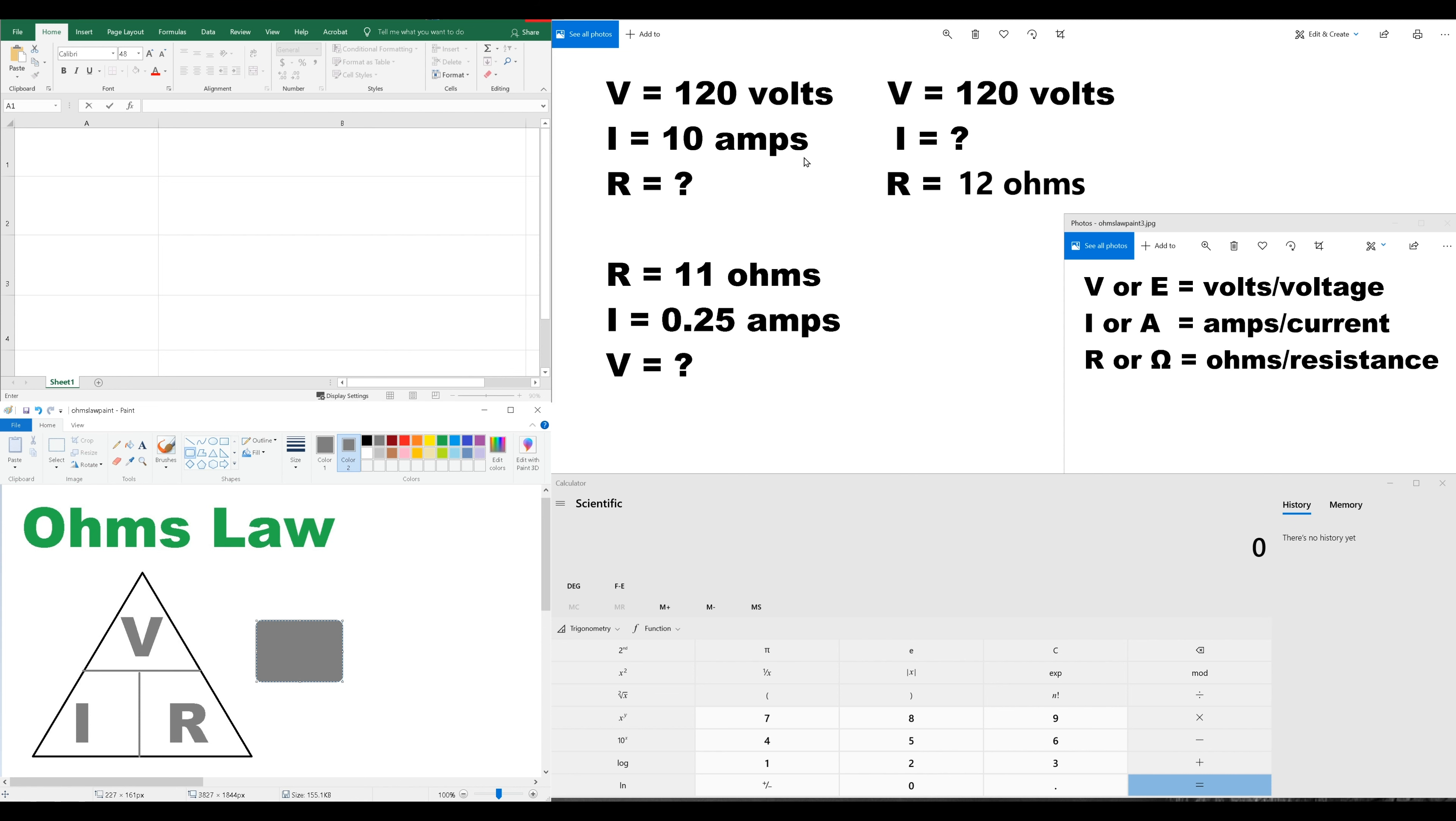Our first example here is V equals 120 volts, I equals 10 amps, and our resistance is unknown. So, the way this triangle works is, whichever value you're going to solve for, you simply cover up. And what you have remaining is what you need to do for this equation. So, what we have left here is V over I equals R.